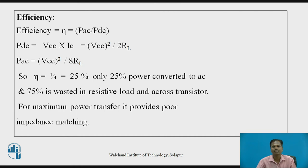This means that only 25 percent of DC power is converted to AC power delivered to the load, and the remaining 75 percent of DC power is wasted in the resistive load and across the transistor. For maximum power transfer, it provides poor impedance matching.